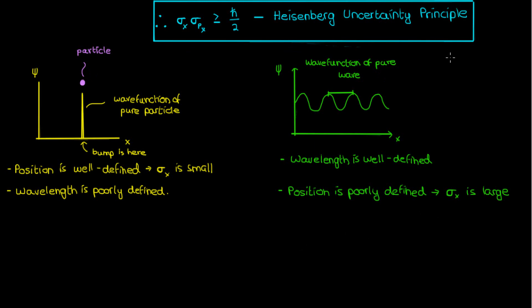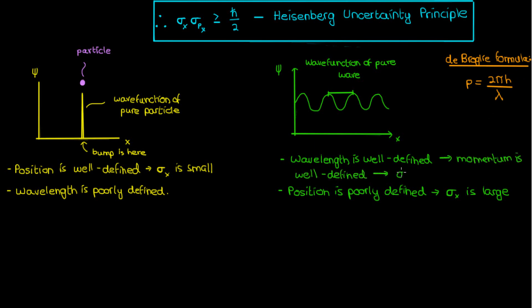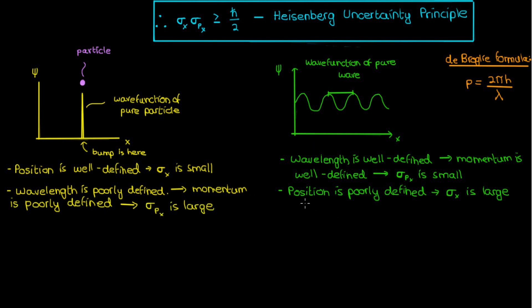Now you might say I'm supposed to be talking about a trade-off between position and momentum, but here I'm talking about a trade-off between position and wavelength. Well, it turns out that the wavelength λ and the momentum p are closely related to each other via the de Broglie formula. So if λ is well defined, then by this equation it stands to reason that momentum is also well defined — the uncertainty on momentum is small. But in the first case, where the wavelength was poorly defined, by the de Broglie formula the momentum is also poorly defined and the uncertainty on momentum is large. Both situations illustrate that a precisely defined position necessarily means a poorly defined momentum and vice versa — this is a more intuitive, physics-based explanation of the Heisenberg uncertainty principle.